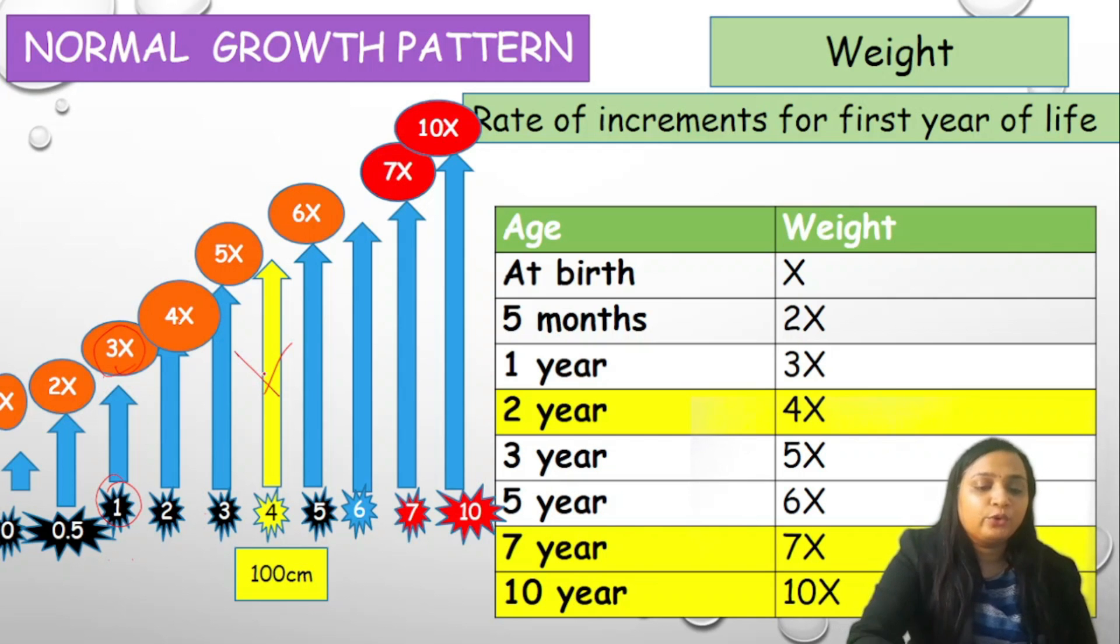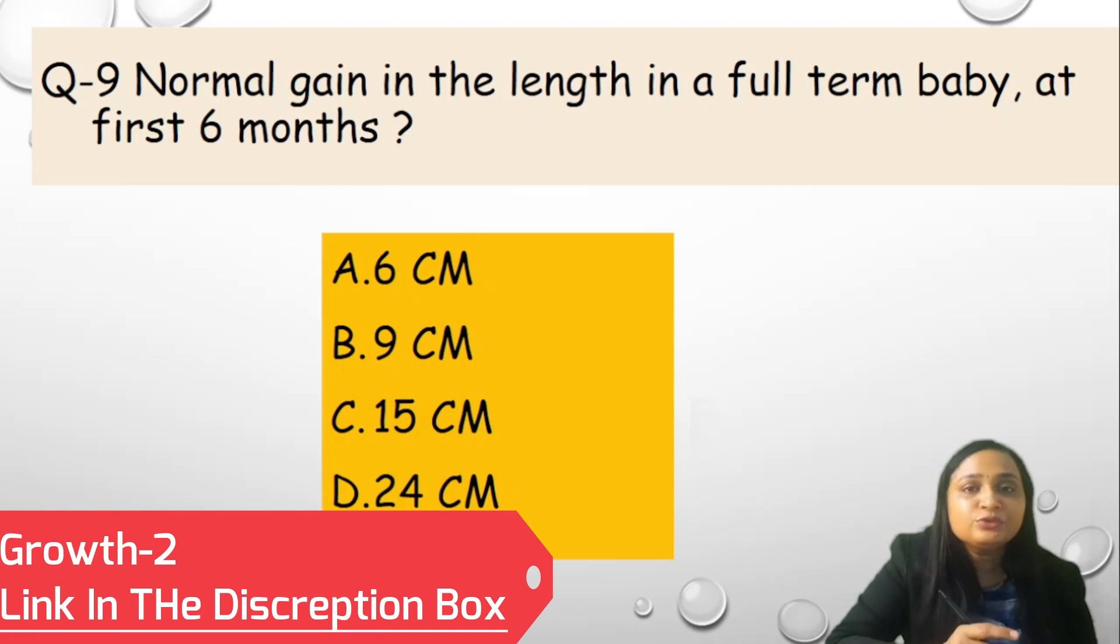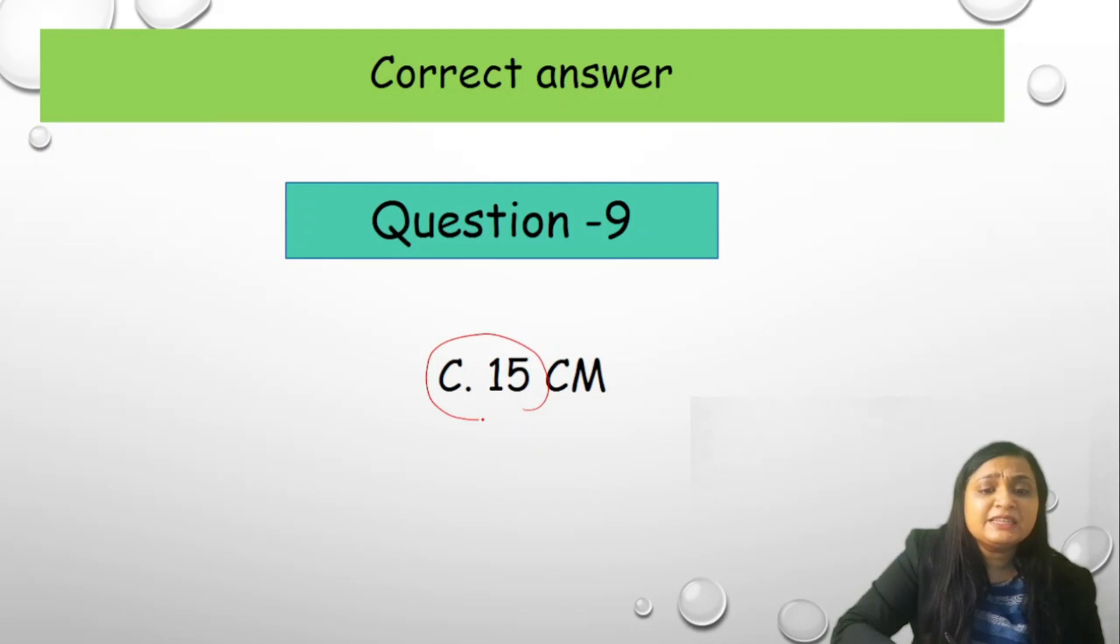We have to skip number 4 and number 6. The next question is normal gain in the length. The weight questions are over. We will move to the questions regarding the length and the height. Normal gain in the length in a full term baby at first 6 months. If you are not going through the series 2, I insist please go through it. Link is in the description box as well as in the I button. Options are 6 cm, B 9 cm, C 15 or D 24.